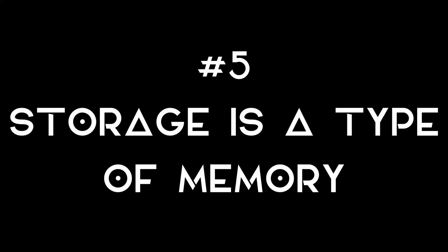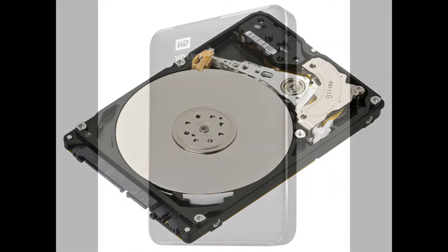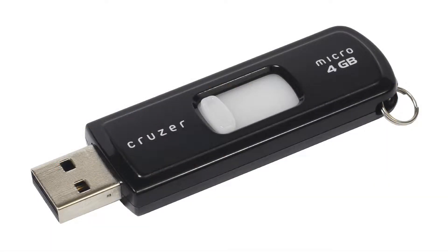Number five: storage is a type of memory. Where the misconception is, the tech industry tried to make it more simple but actually complicated this basic principle a little bit. There's a difference between permanent memory and temporary memory — storage is referred to as the permanent memory. Examples of your permanent memory would be internal and external hard drives, solid state drives, and flash drives.